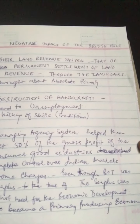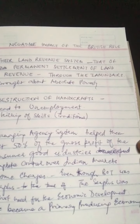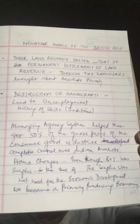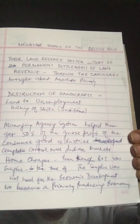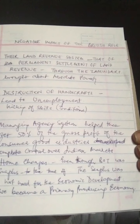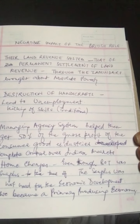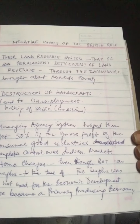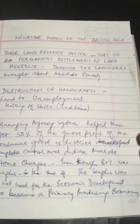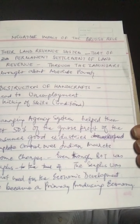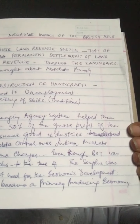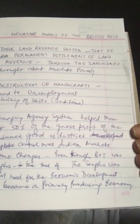Through the managing agency system, they took away about 50% of the gross profit from consumer goods industries developed in India. They also exploited the Indian economy through an economic drain — the foreign exchange earned was written off as home charges for so-called services they provided.